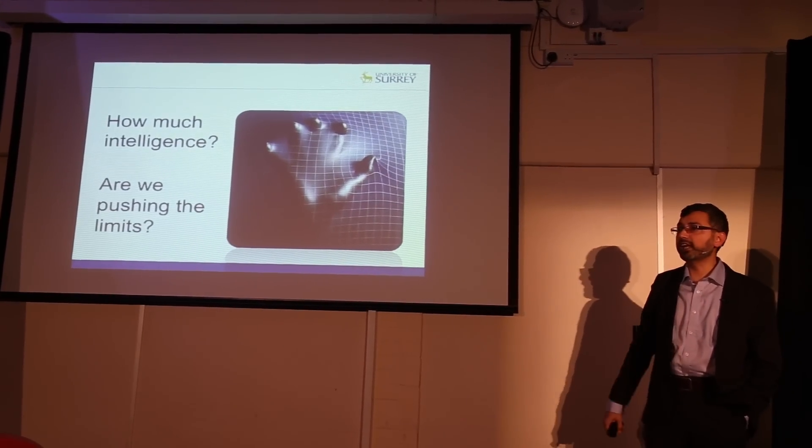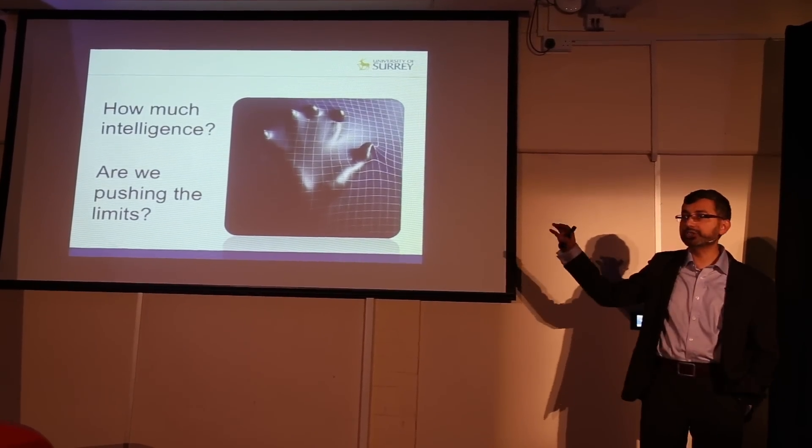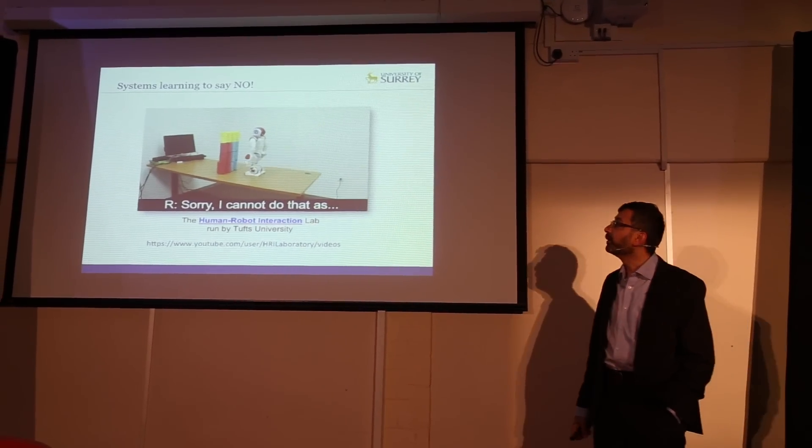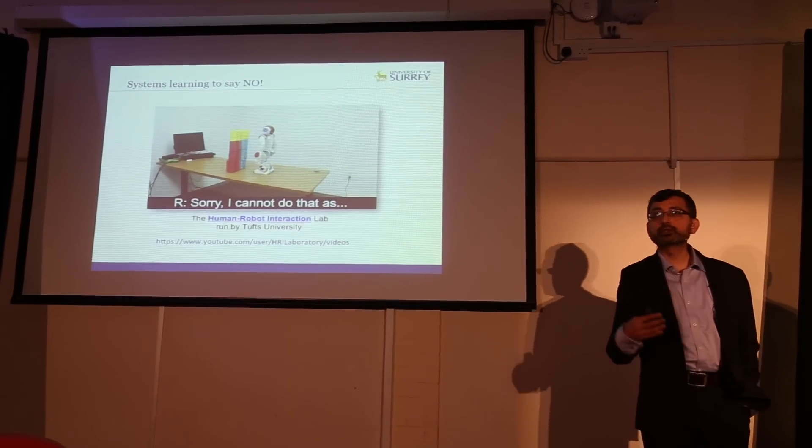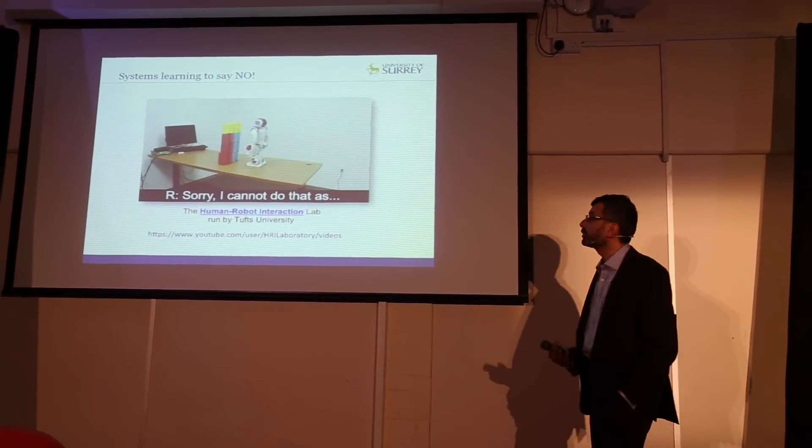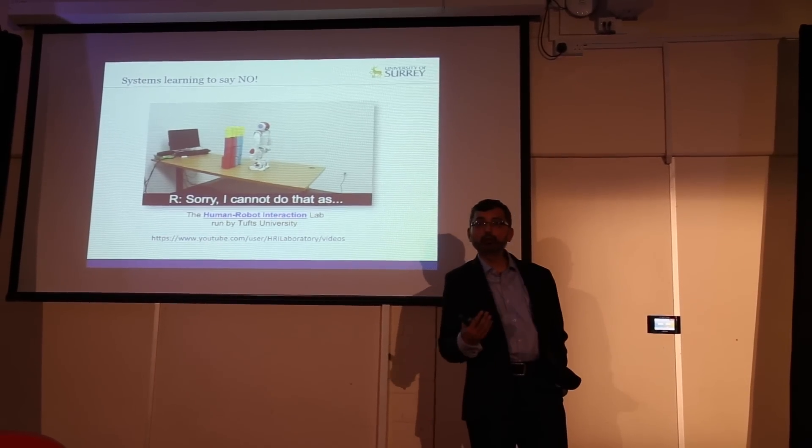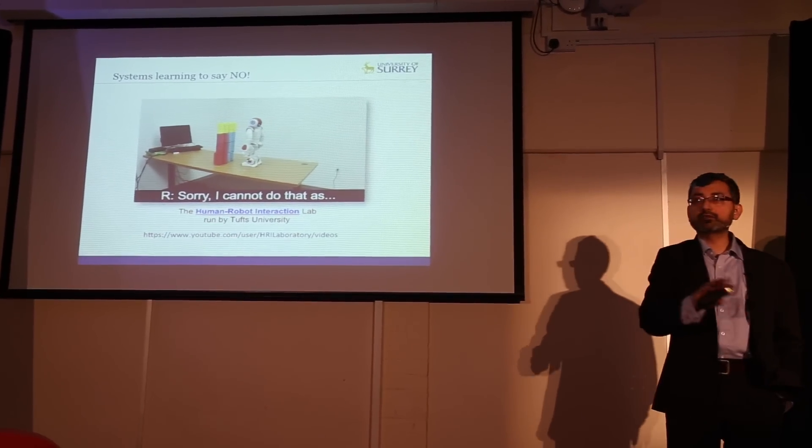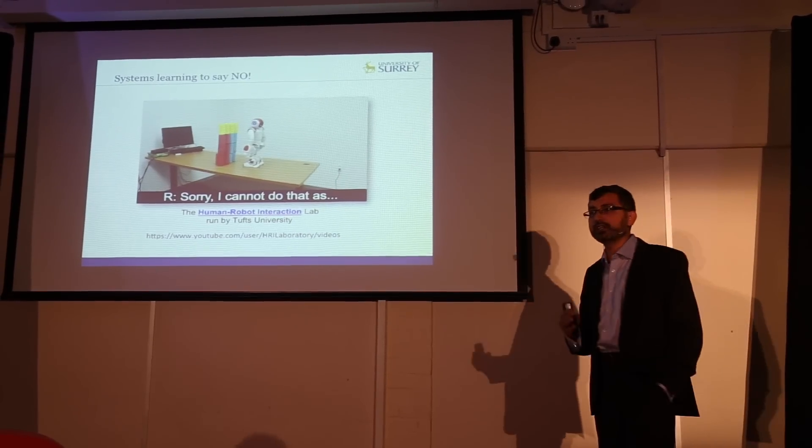So how much intelligence we should have and how much intelligence we should target? Are we really pushing the limits? You are aware of some systems which are now being taught to say no, which are being taught to disobey your commands. So do we want to go to those limits? Of course, if you are trying to teach them to say no to a specific set of commands or specific set of situations, then it is fine because you are in control. You are telling them where to say no and where to say yes.